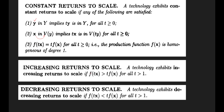Decreasing returns to scale is the opposite. A technology exhibits decreasing returns to scale if, after scaling the factor inputs by t, the new production level is less than the initial output multiplied by the scalar t. So this is all about constant, increasing, and decreasing returns to scale. Thank you for watching.